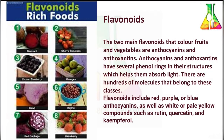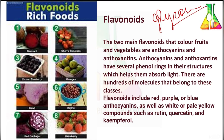Flavonoids are very widely distributed in the plant kingdom. They are water-soluble polyphenolic substances, similar in structure to anthocyanins, and also occur as glycosides — a molecule in which a sugar is bound to another functional group via a glycosidic bond. They include the subgroups of flavones, flavonols, flavanones, and chalcones.